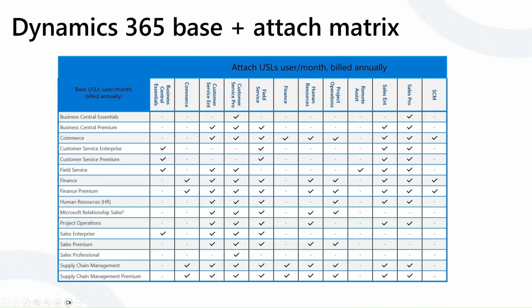This matrix talks about what can be a base and attach license. The simple rule is that the most expensive license is going to be the base, and the others will be attached licenses. For example, you can have a Finance base with a Supply Chain attachment because they are the same cost. The other way also applies — you can have a Supply Chain base with a Finance attached.